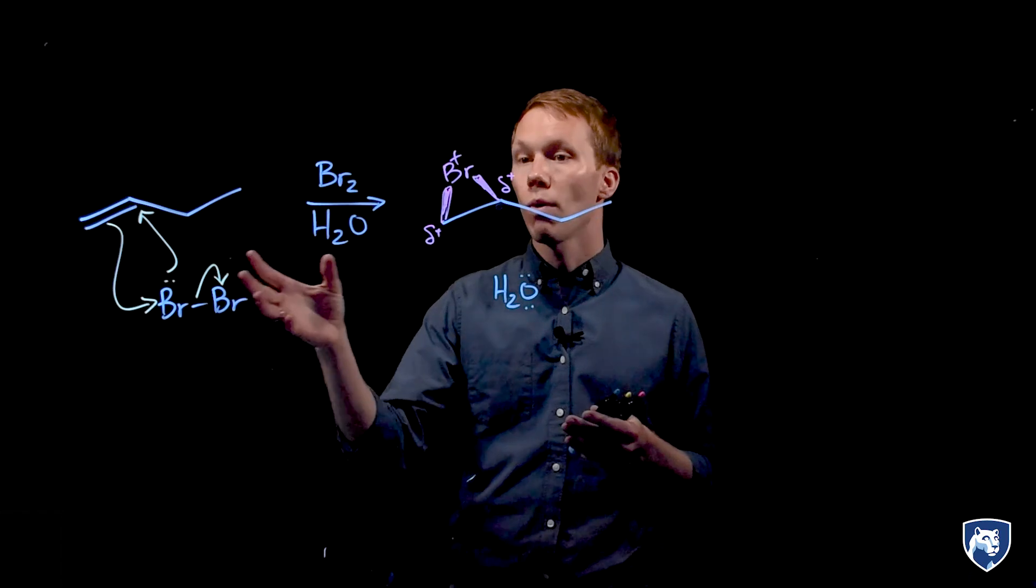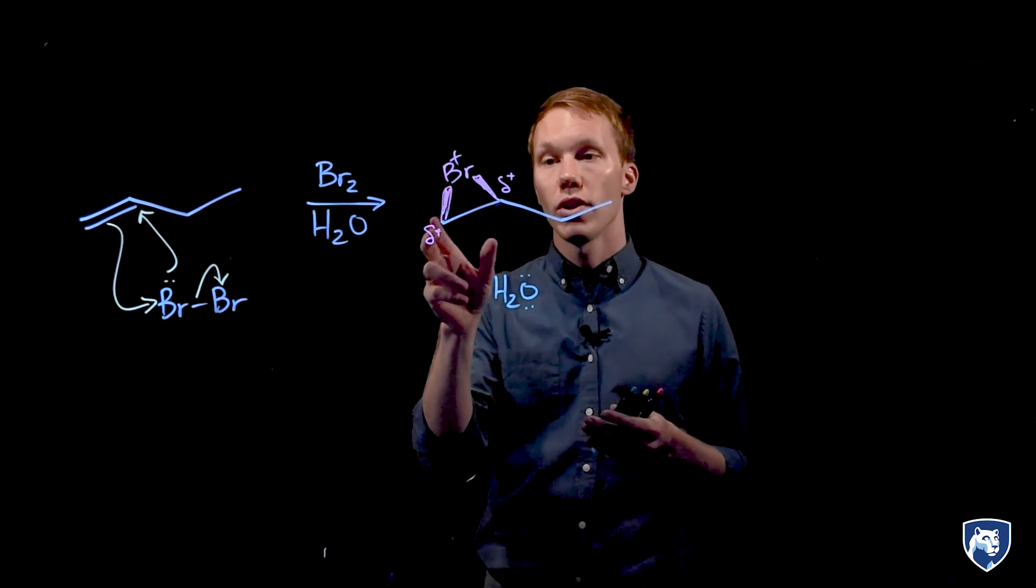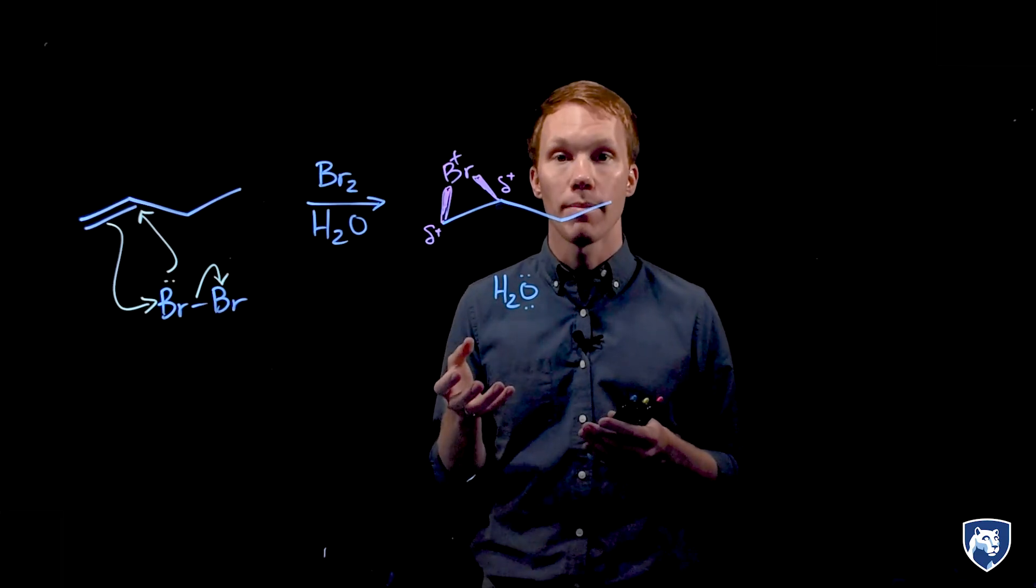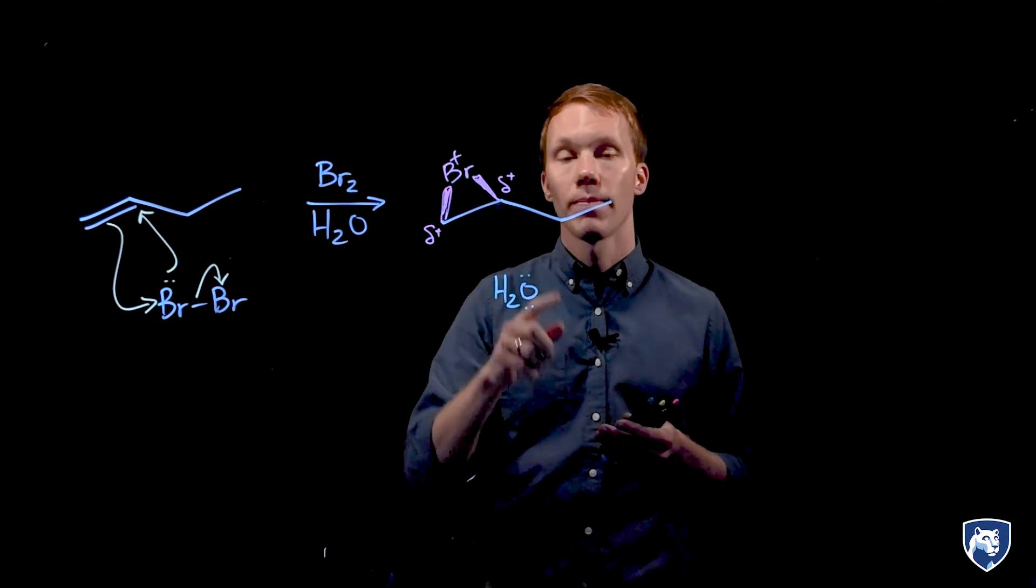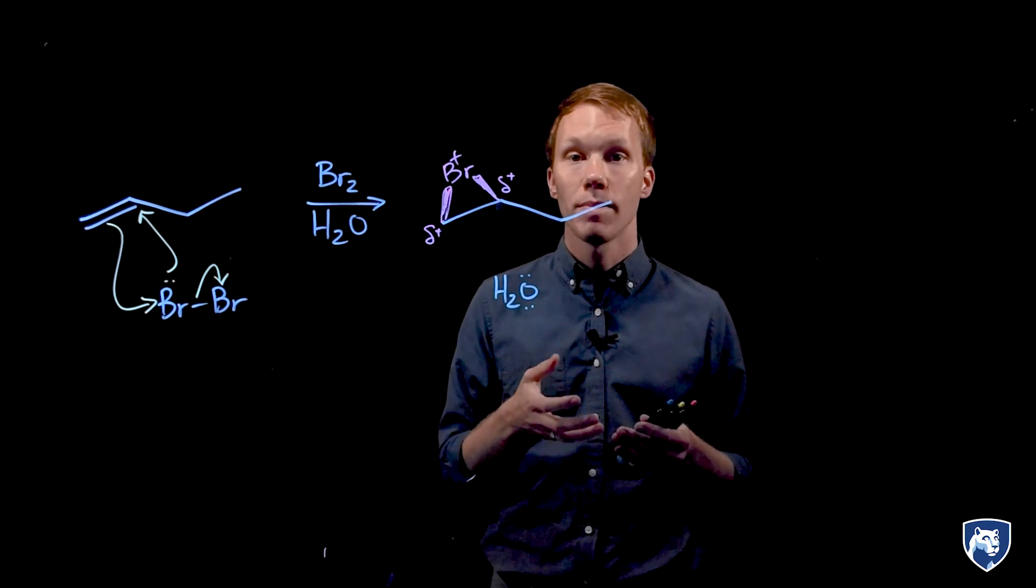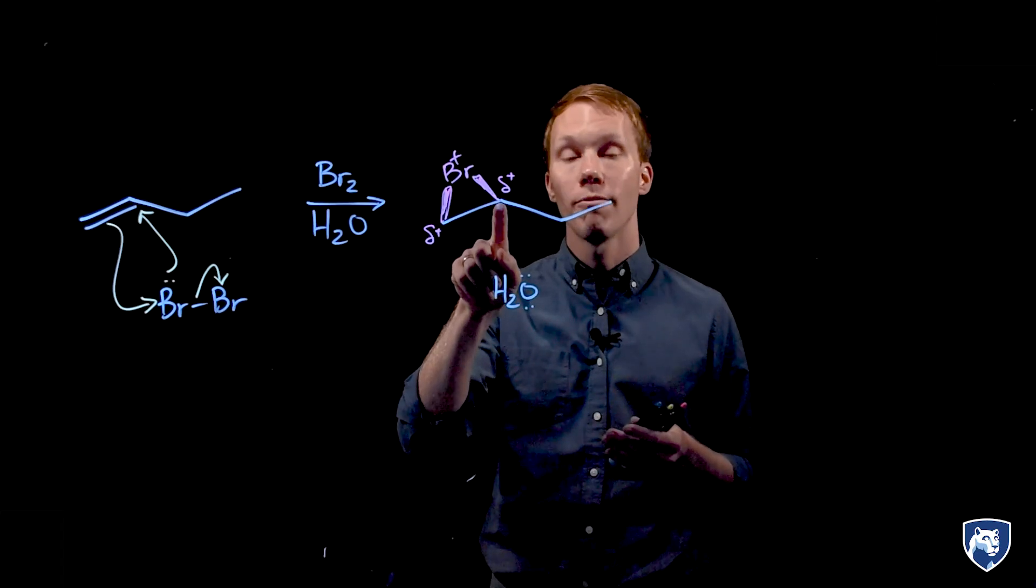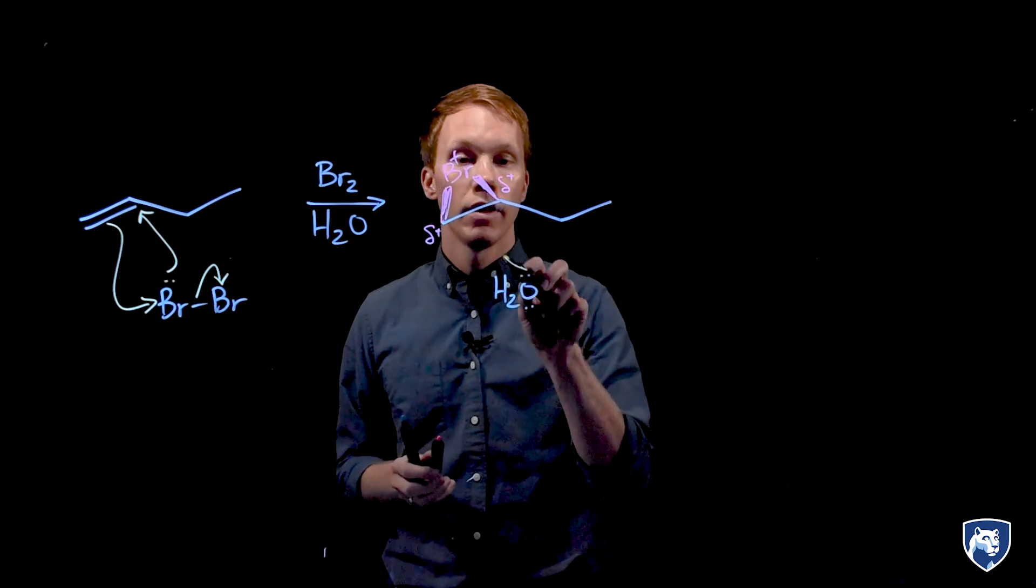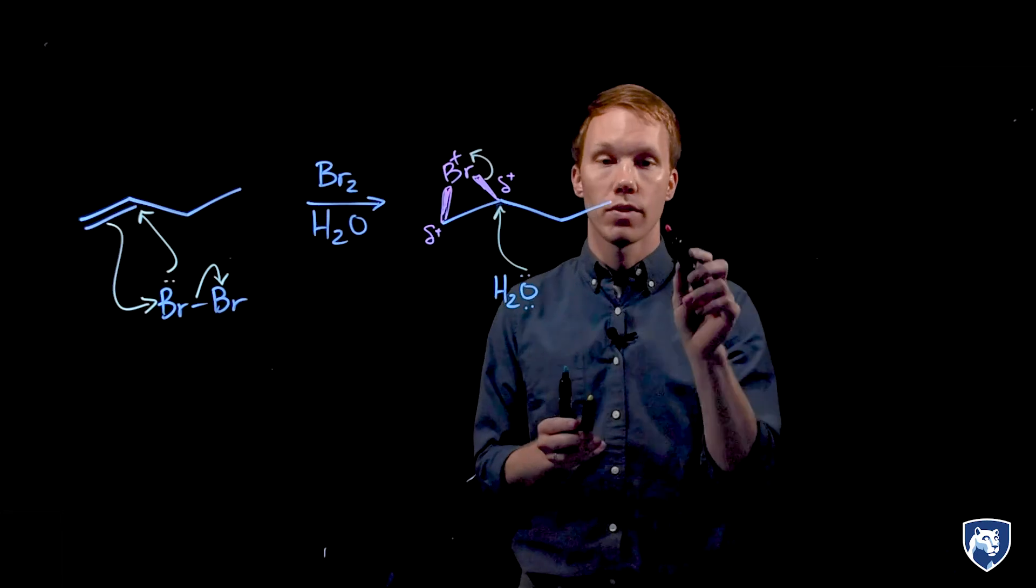Based on our mechanism, we form this cyclic bromonium ion intermediate. This charge is shared over three atoms. The charge is going to want to be on the atom where it is the most stable. We have two different carbons here. We have a primary carbon and a secondary carbon. Carbocations are more stable on more substituted sites because of inductive effects. This secondary carbon being more substituted will have more of the positive charge and will attract our nucleophile to it. And that is what causes the regioselectivity for this reaction.